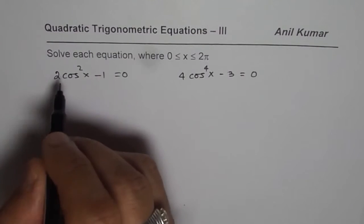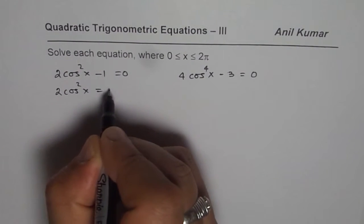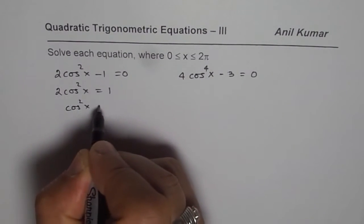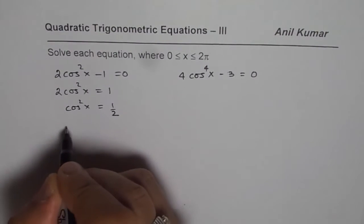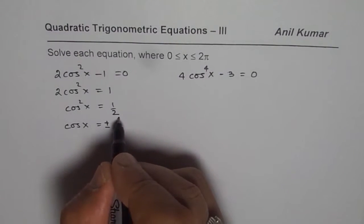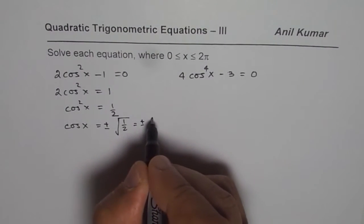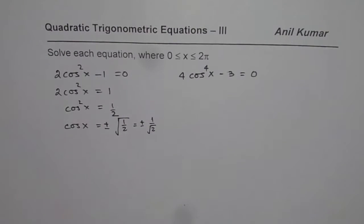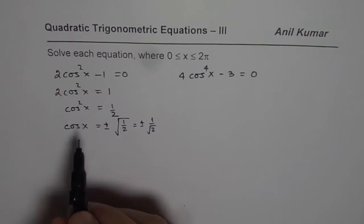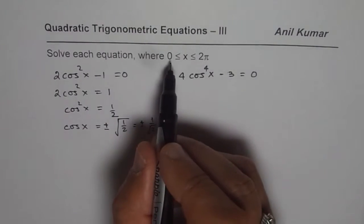So the first one we can rearrange. We get 2cos²x = 1 or cos²x = 1/2 or we can write cosx = ±√(1/2), which is the same as ±1/√2. That means we are looking for both positive and negative values for cosx being 1/√2 in the domain 0 to 2π.